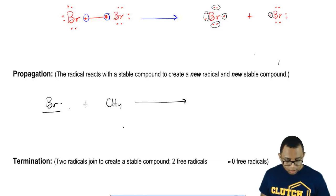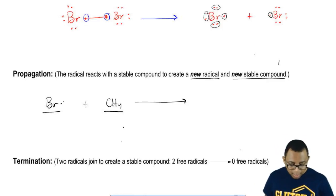We have a radical, a stable compound, they react together to form a new radical and a new stable compound. Basically, what happens here is that Br comes in and basically kicks out one of the hydrogens.